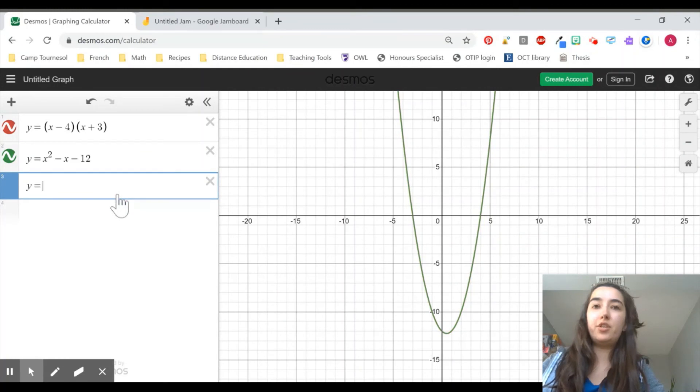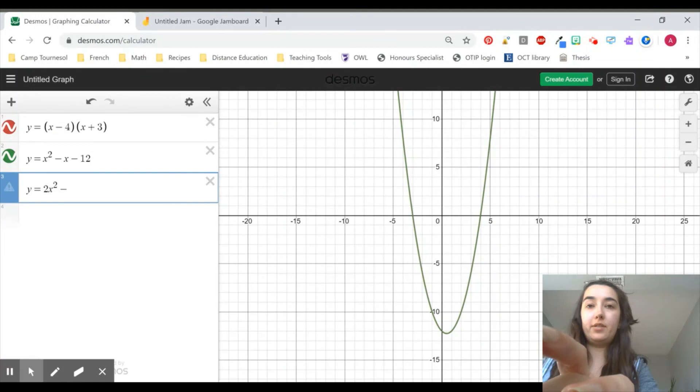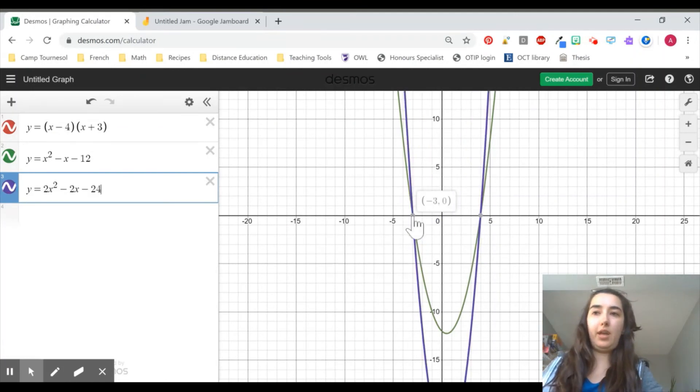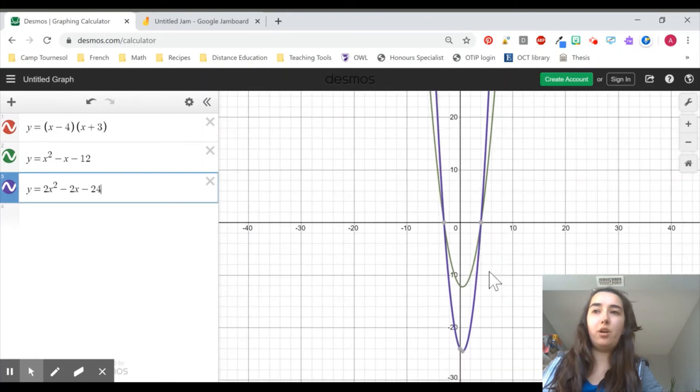What if I presented you with this parabola? y is 2x squared minus 2x minus 24. It has the exact same x-intercepts. It meets the criteria that I presented you with, an x-intercept of negative 3 and an x-intercept of 4, but it is nowhere near the parabola that you gave me. So how on earth can we find the exact formula of the parabola?